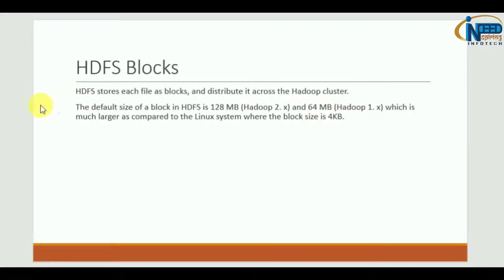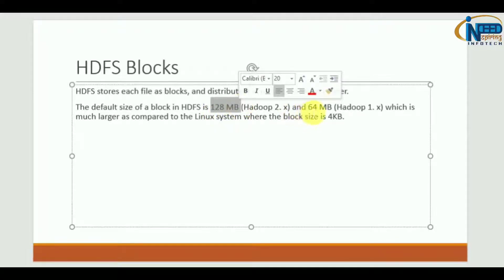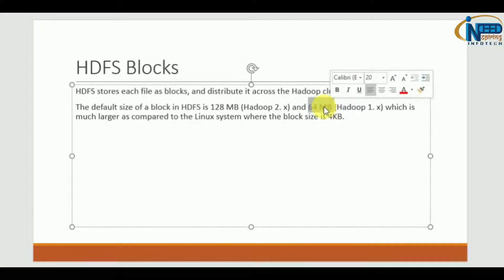Let us understand what HDFS blocks are. HDFS is the distributed storage solution given by Hadoop, and HDFS stores each file as a block. These blocks are divided into equal chunks. In Hadoop 2.x, one block size is 128 MB, and in Hadoop 1.x it was 64 MB. It can be changed or configured to any multiple of 64 MB.